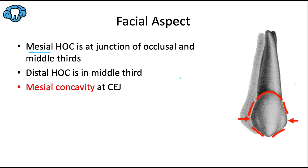For all premolars, the mesial height of contour is located between the junction of the occlusal and middle thirds, and the distal height of contour is in the middle third. There's also a notable mesial concavity between that height of contour and the CEJ that mirrors the distal concavity of the maxillary canine, making that gingival embrasure symmetrical.